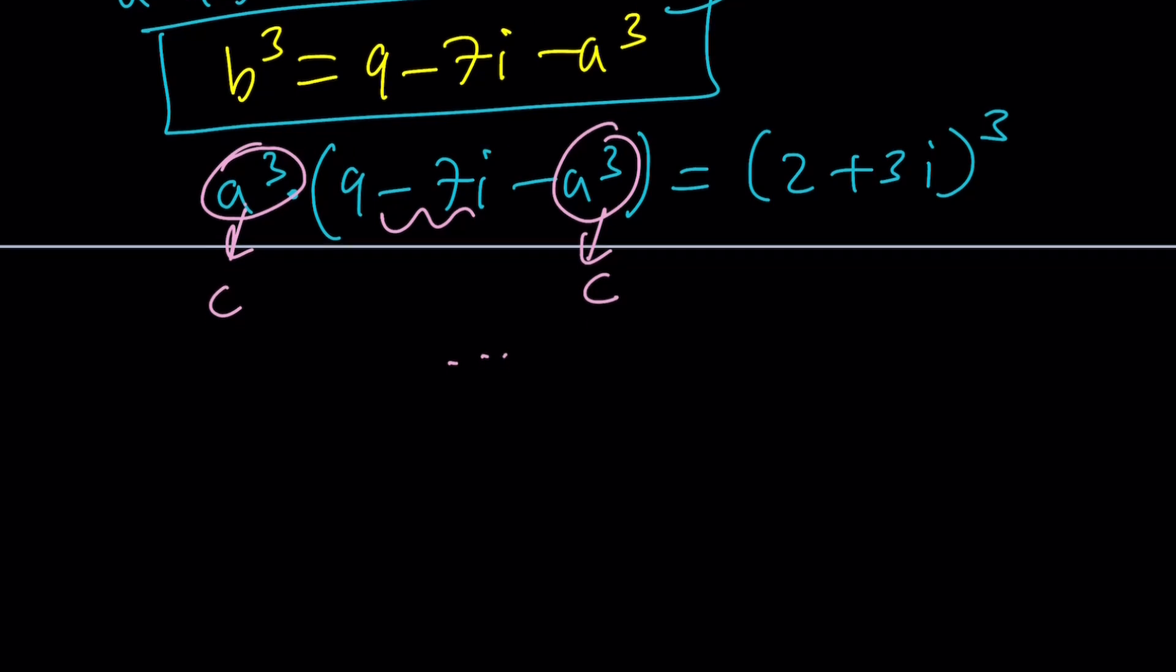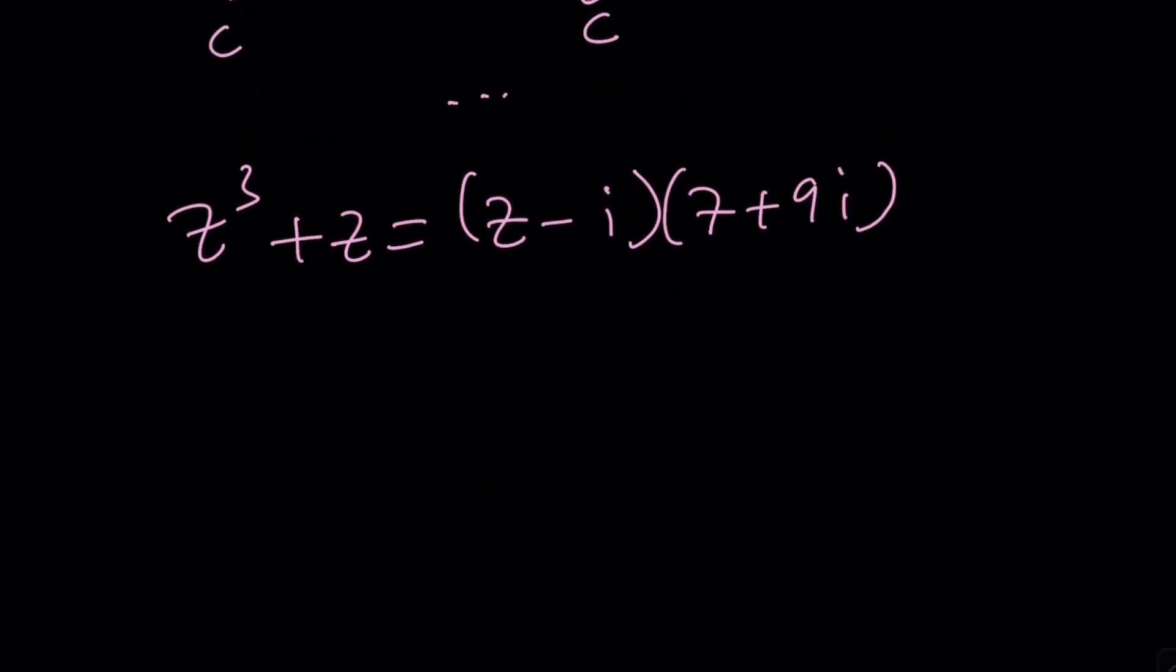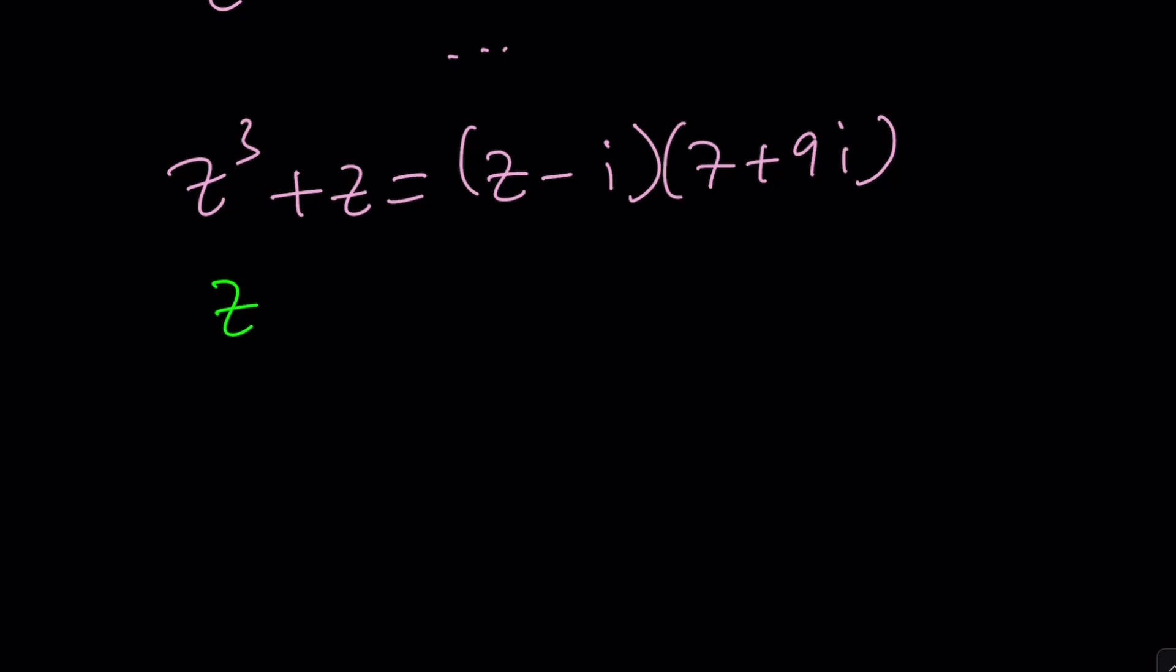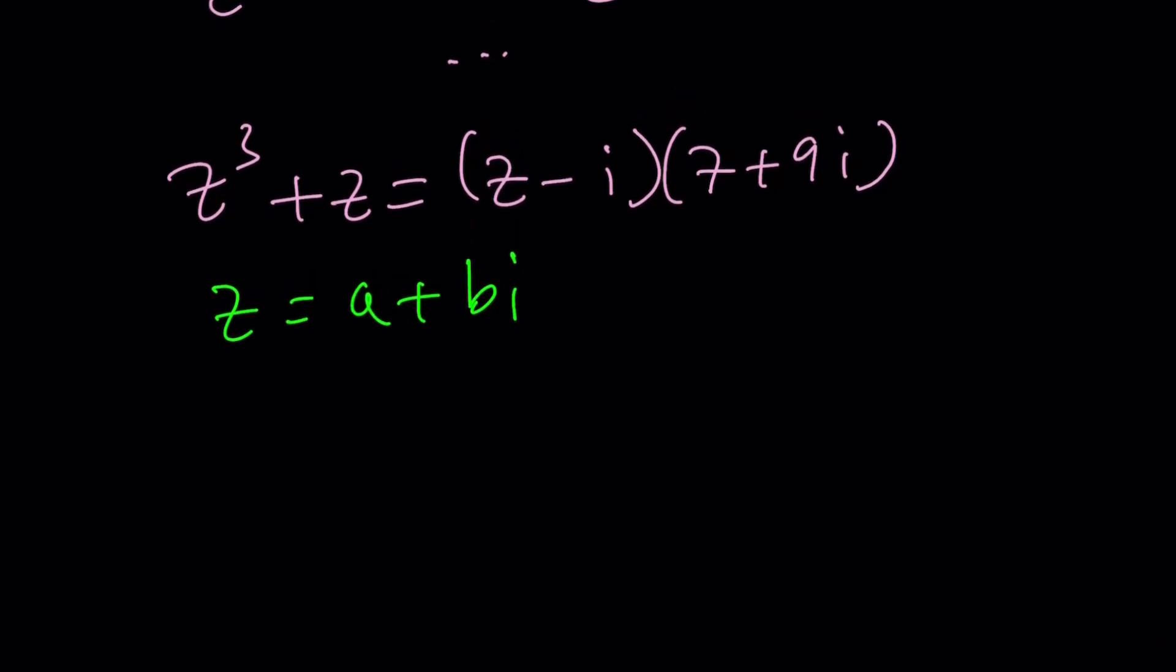So let's talk about the second method, or should I say the branch off? After we cross multiply, remember this is what we got. At that point, you didn't have to go into the cubic formula deal. You could do this. Why don't we call z a+bi? And that's the name of the channel.